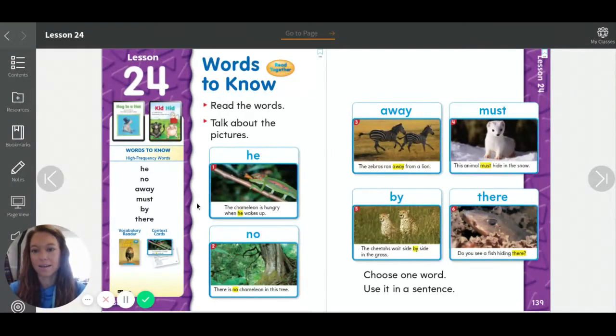So here on the left are words in black: he, know, away, must, by, there. Now let's go through them one by one.